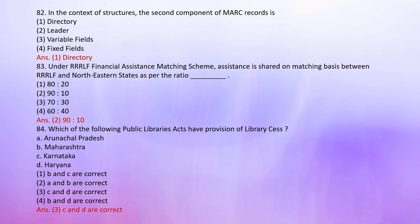Number 83: The ratio — options: 1. 80:20, 2. 90:10, 3. 70:30, 4. 60:40. The correct answer is 2: 90:10.